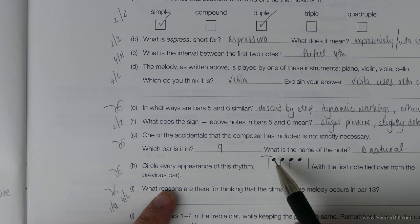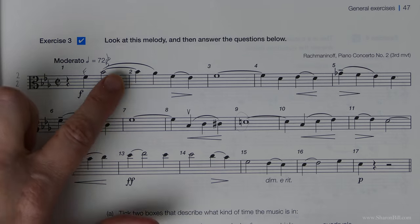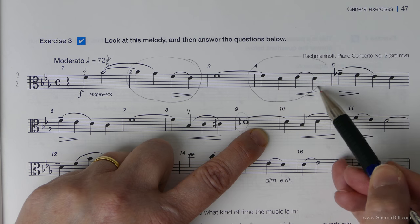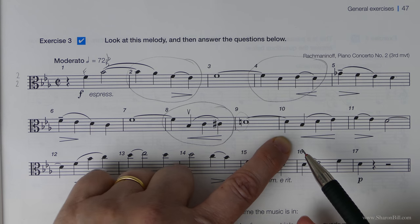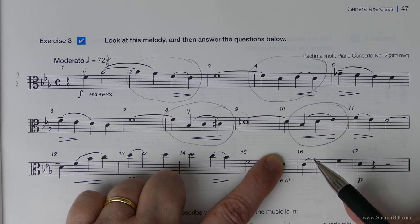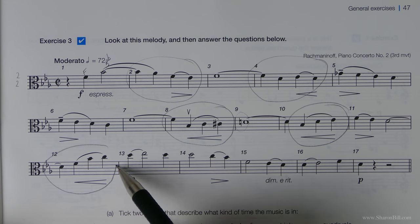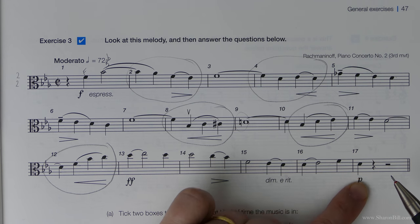Circle every appearance of this rhythm. We're looking for a tie over a bar that ties into a crotchet, crotchet, crotchet, crotchet. So we've got a bar full of quarter notes with a tie over the bar line. We can see here in bar 2, here in bar 4, bar 8, bar 10, bar 12. It doesn't matter that the notes are doing different things. It's the tie and the note values.